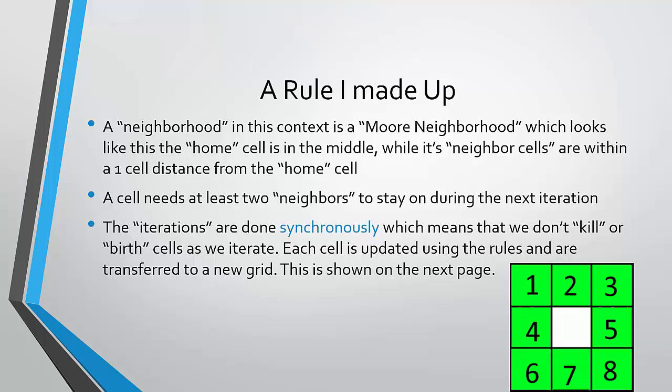Well, first, you need to understand what a neighborhood is. A neighborhood in this context is considered a Moore neighborhood, invented by someone named Moore, probably. Which looks like this, where the home cell is in the middle, indicated by the white, and its neighbor cells are within a one cell distance from the home cell. So you can see that this is one cell away, one cell away, et cetera.